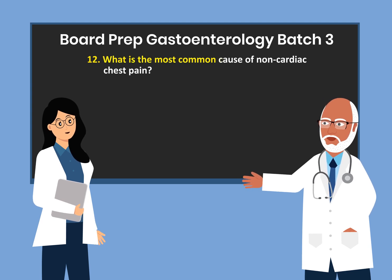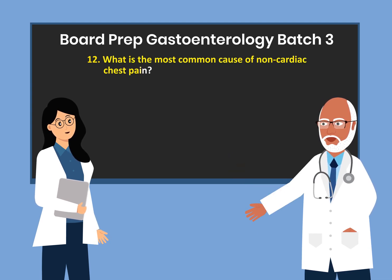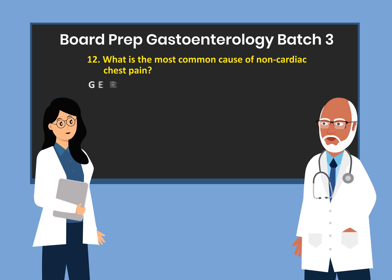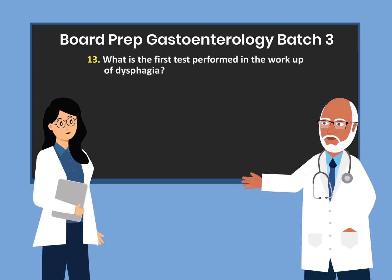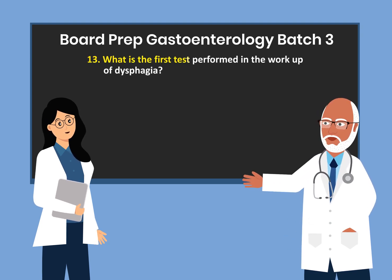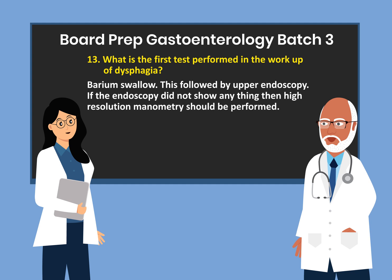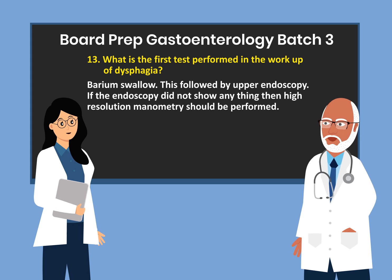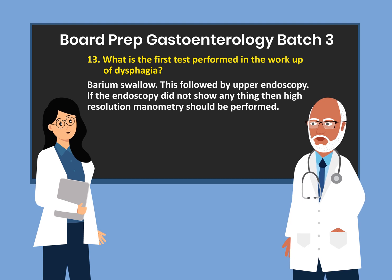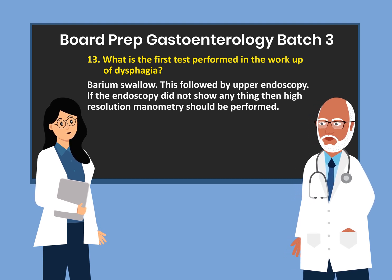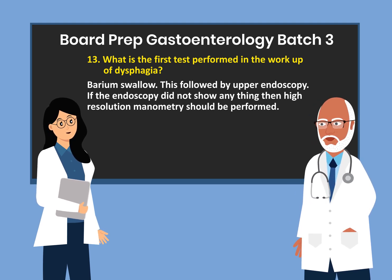Question 12. What is the most common cause of non-cardiac chest pain? GERD. Question 13. What is the first test performed in the work-up of dysphagia? Barium swallow. This is followed by upper endoscopy. If the upper endoscopy did not show anything, then high-resolution manometry should be performed.